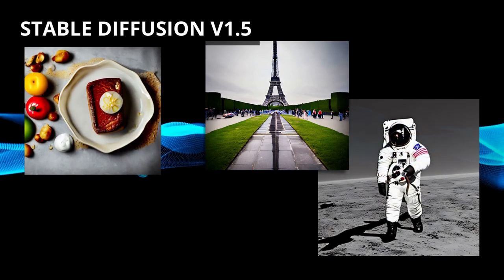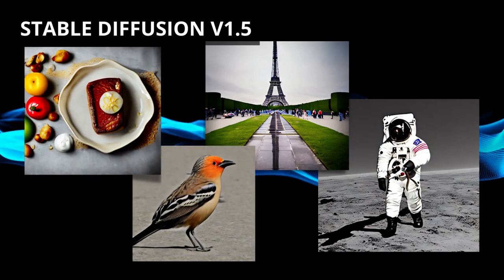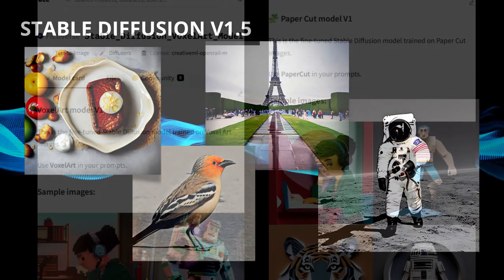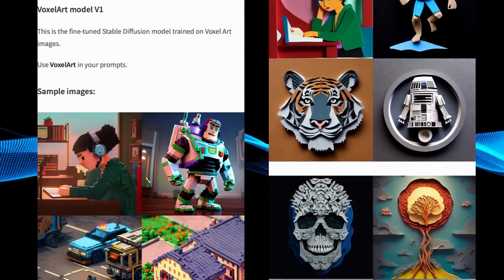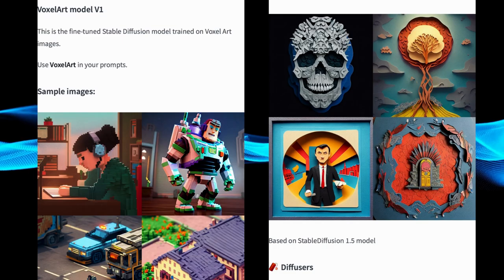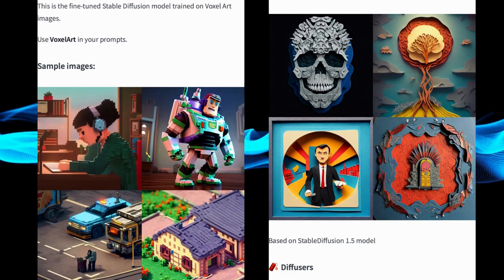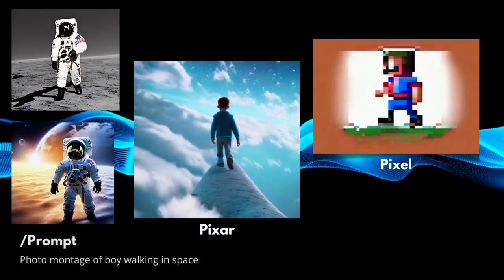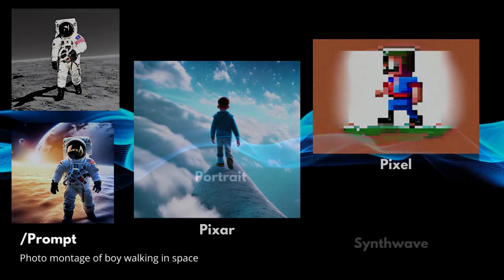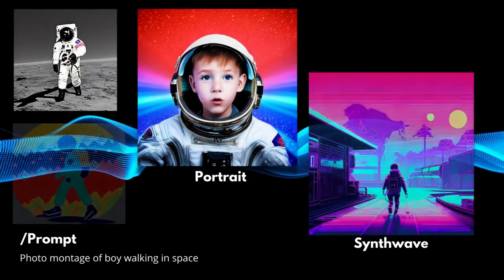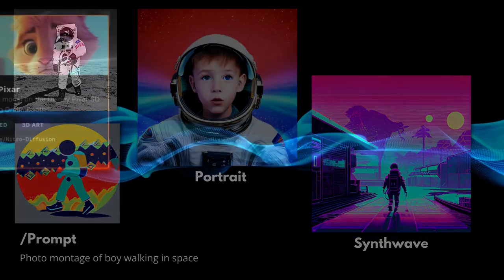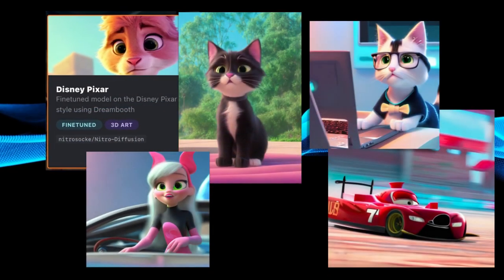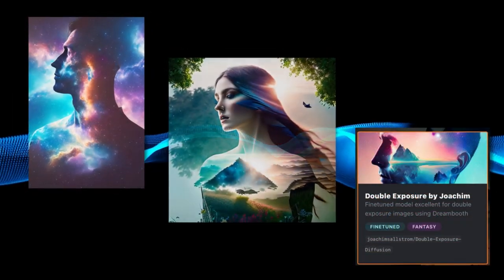The magic of Stable Diffusion lies in the prompting and the use of fine-tuned Stable Diffusion models. These models are trained on very specific images that may have a unique style or content. The same prompt used in different Stable Diffusion models will get you a very different style of image. Want all of your images to look like they came from a Disney-Pixar movie? Or want all of your images to be double exposures? There are models for that.